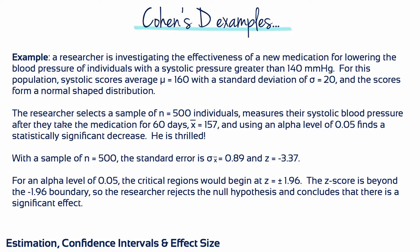Using an alpha level of 0.05, he finds a statistically significant decrease. With a sample of N equals 500, the standard error of the mean is 0.89, and our Z-score is minus 3.37. For an alpha level of 0.05, the critical regions would begin at Z equals plus or minus 1.96. The Z-score is beyond the minus 1.96 boundary, so the researcher rejects the null hypothesis and concludes that there's a significant effect.